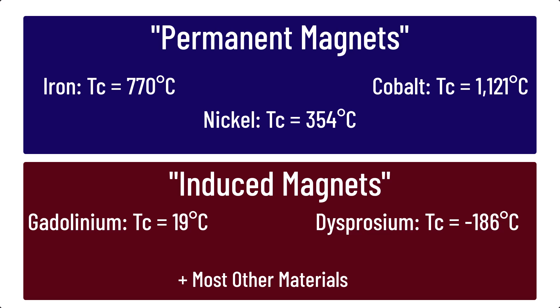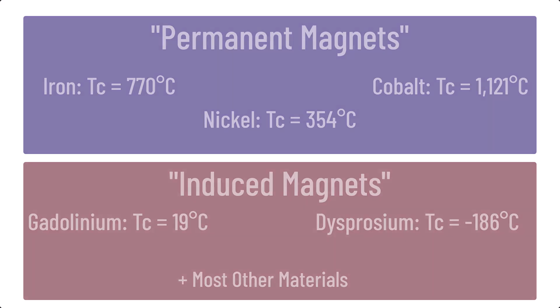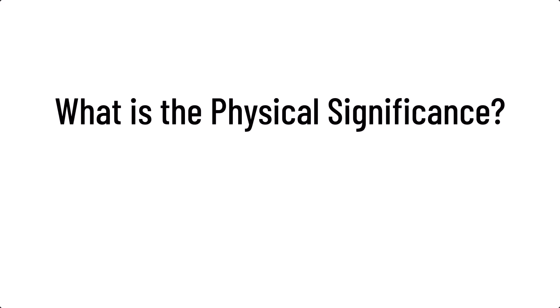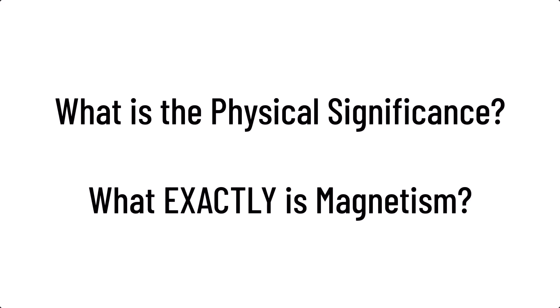This means that a phase transition occurs as you cool materials past their Curie temperature, as the material transitions between the paramagnetic and ferromagnetic phase. But what does this mean physically? What is magnetism, and why is this transition so interesting?